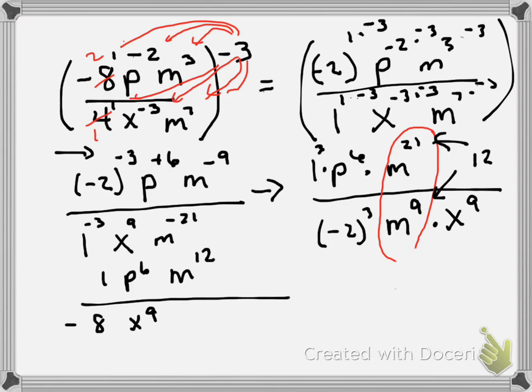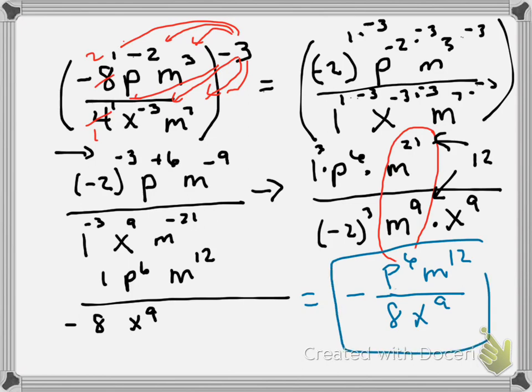This is the answer and we're going to clean it up. The answer is negative 1/8 — we don't even need to put the 1 — so it's P to the 6th times M to the 12th over X to the 9th. I can put the negative on the 8. It doesn't matter where I put it, but basically this is our answer.